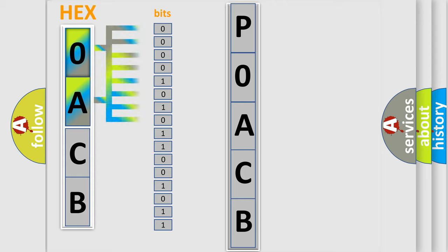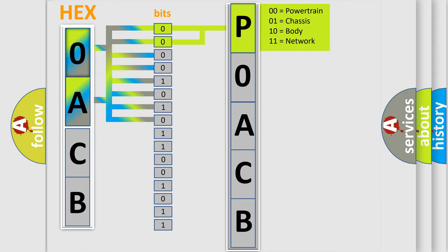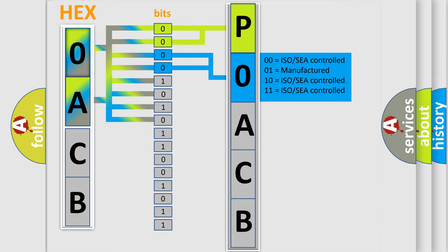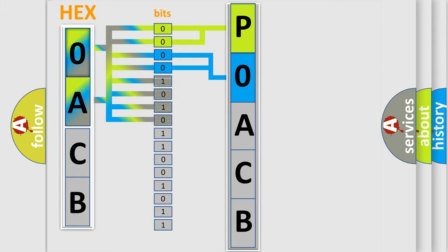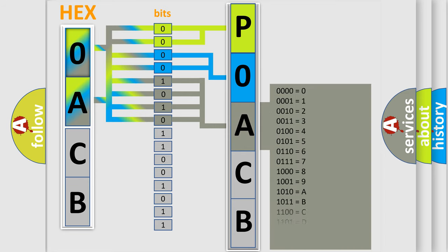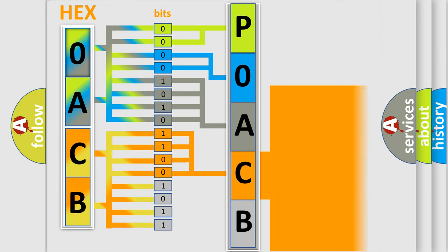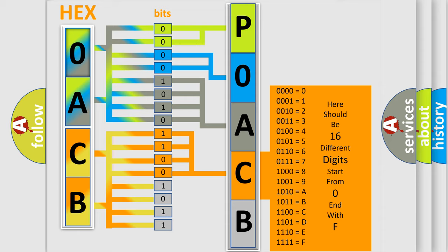The bit has two logical states: zero (low level) and one (high level). By combining the first two bits, the basic character of the error code is expressed. The next two bits determine the second character. The last bits of the first byte define the third character of the code. The second byte is composed of a combination of eight bits: the first four bits determine the fourth character, and the combination of the last four bits defines the fifth character.